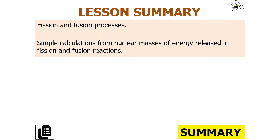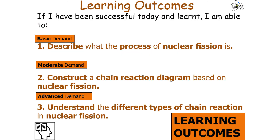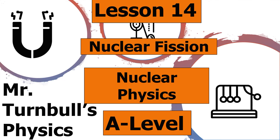In our lesson, we have looked at the fission process, and we will look at the fusion process next time, along with simple calculations from nuclear masses of energy released in the fission reaction. If we've been successful, we should be able to describe what nuclear fission is, construct a chain reaction diagram based on nuclear fission, and understand the different types of chain reaction. Thank you very much for watching, and have a lovely day.